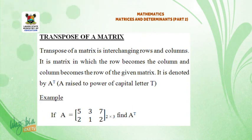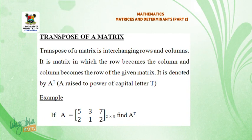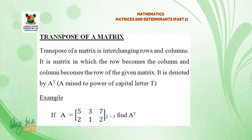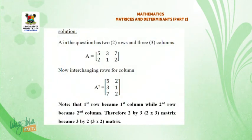Example. If A is equal to the matrix: 5, 3, 7, 2, 1, 2 — find A transpose. The transpose of A is equal to the matrix: 5, 2, 3, 1, 7, 2.